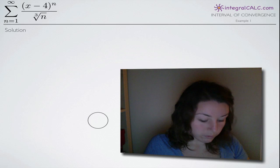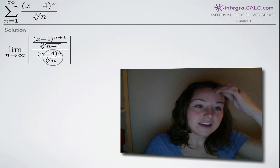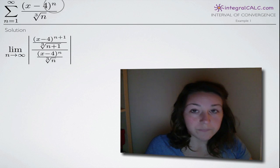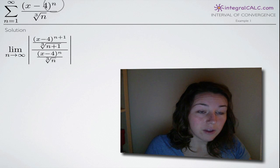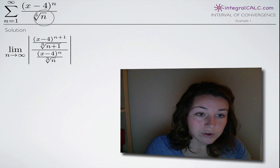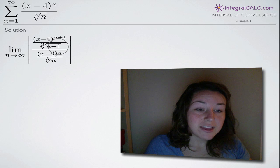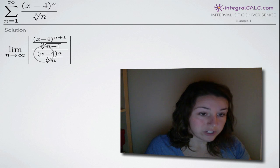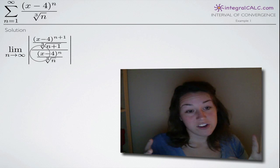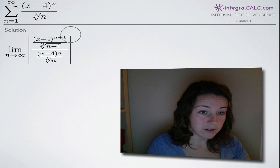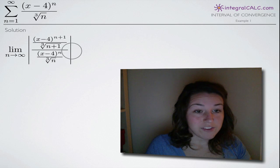The first thing that we need to do when talking about intervals of convergence is substitute n plus 1 everywhere we have n in our original function — in the exponent in the numerator and under the cube root in the denominator. We take that whole thing, divide by the original function, and find the limit of the absolute value of that whole thing as n approaches infinity.